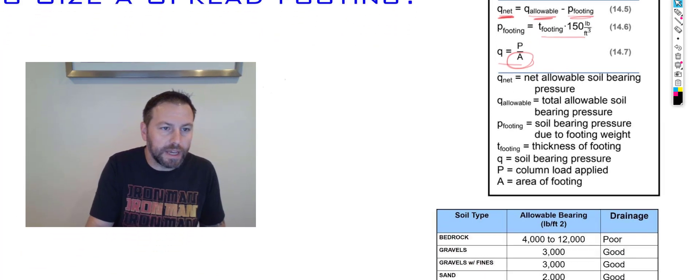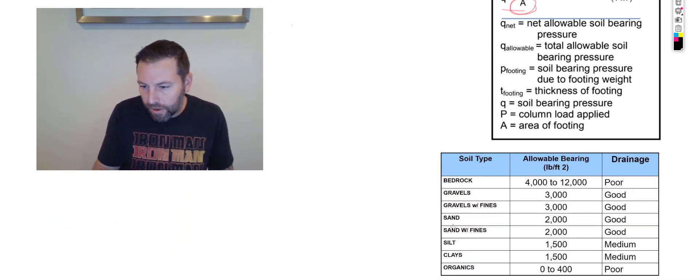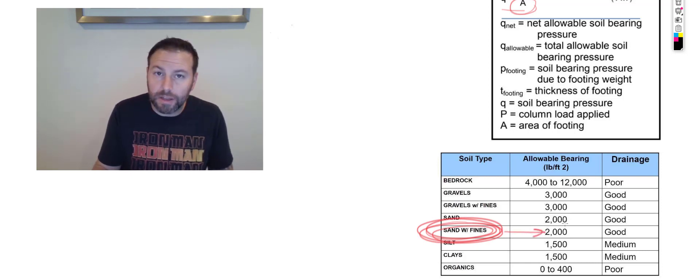So we are going to say that in this scenario, we have sand with fines. So our allowable bearing pressure is 2,000 pounds per foot squared, and relatively good drainage, but we don't have to worry about them. So this is our number there.